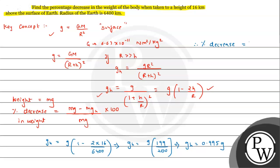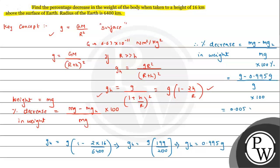Now the percentage decrease equals (mg − mg_h) / mg × 100. Cancelling m from both sides, we get (g − g_h) / g × 100 = (g − 0.995g) / g × 100 = 0.005 × 100 = 0.5%. So the percentage decrease in weight is 0.5%.